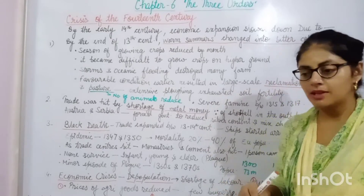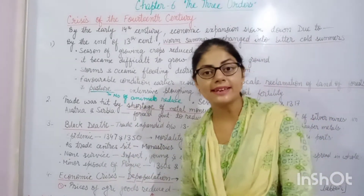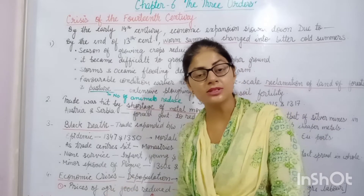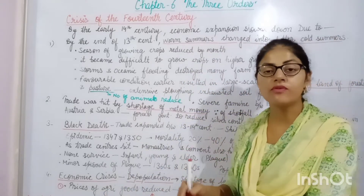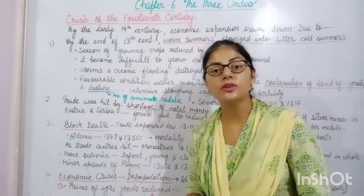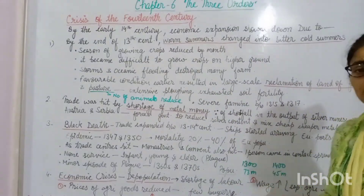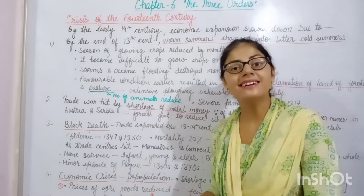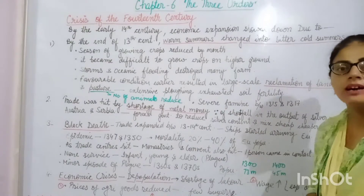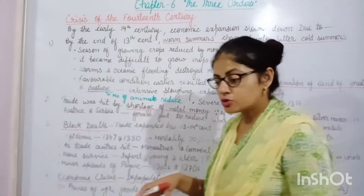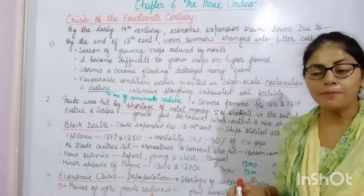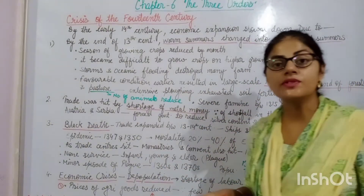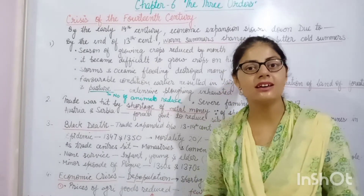Because of the conversion of pasture land into agricultural land, the land available as fodder for animals also reduced. This resulted in the death of a large number of animals, which adversely affected agriculture since agriculture at that time depended on animals. Also, extensive plowing exhausted the fertility of the soil, which further resulted in less crop production.